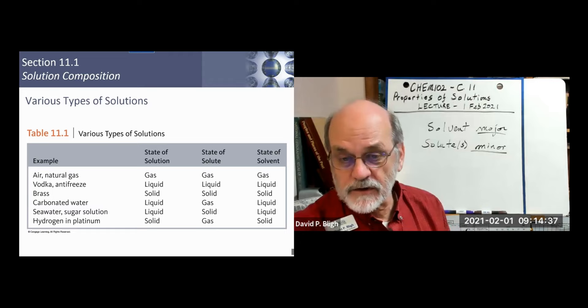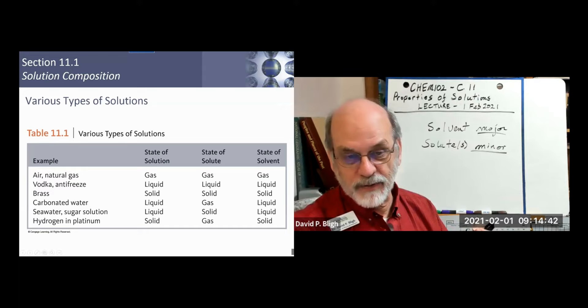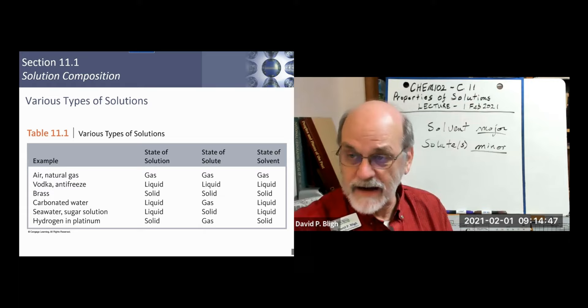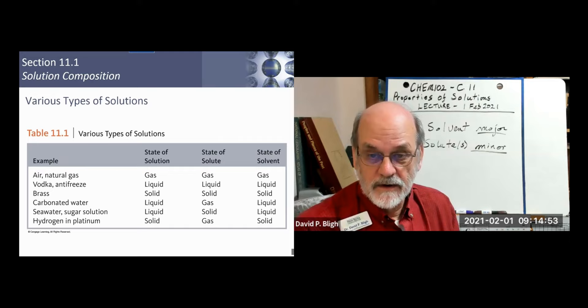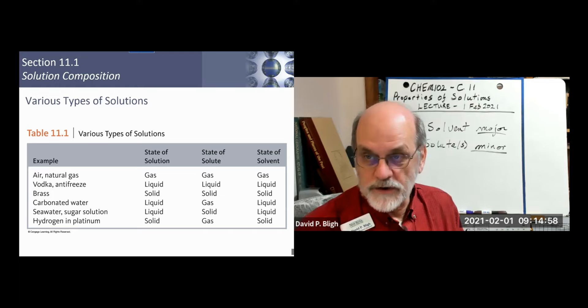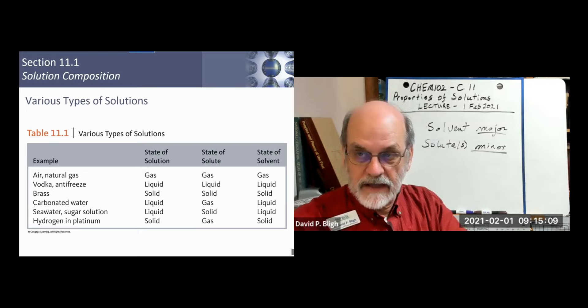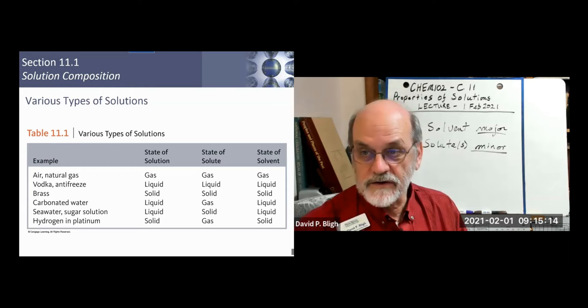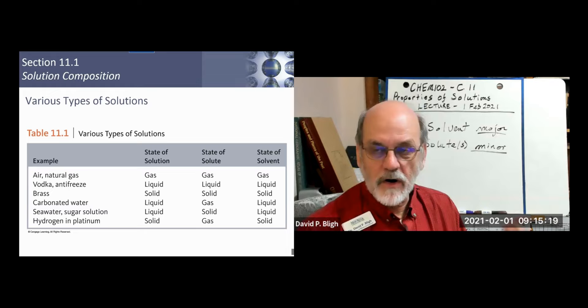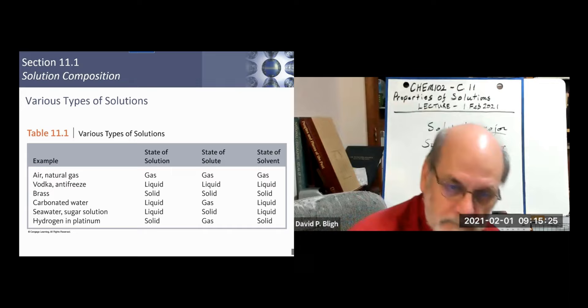Other types of solutions include liquids in liquids — for example, any kind of booze is ethanol in water with some other components. Or antifreeze: antifreeze is typically mixed in a 50-50 ratio by volume. We generally accept water as the solvent for antifreeze. So when you fill your engine, you start off with a lot of water and then gradually add ethylene glycol to make your antifreeze.